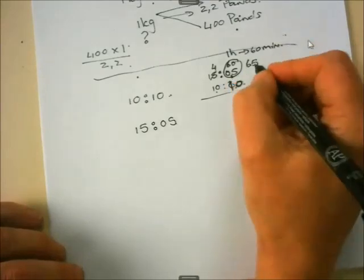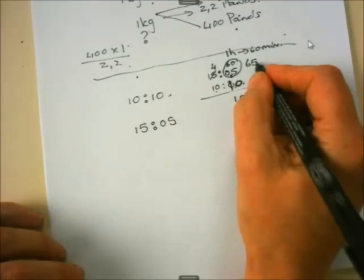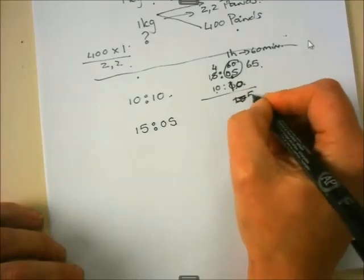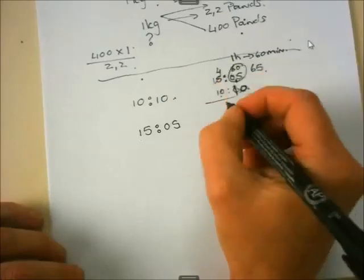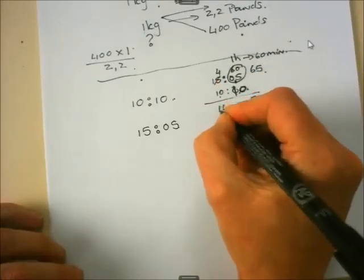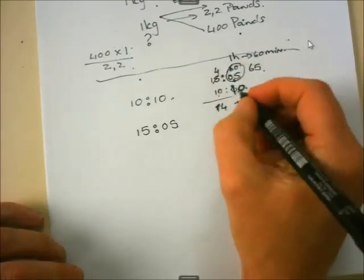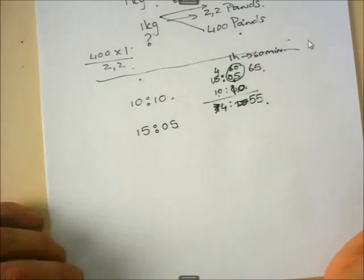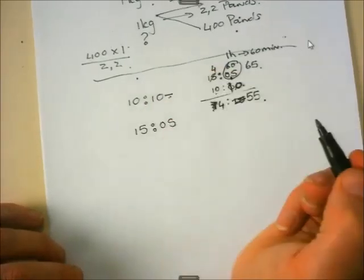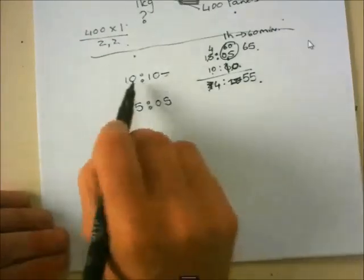And now you can subtract from the 65, you can subtract 10 from 65, which will give you 55. And here you can subtract 10 from 14, and it will say 4. You can simply say 10 from 4 is 4, so it will be 4 hours, 55 minutes, if you are going to calculate the elapsed time from 10:10 to 15:05.